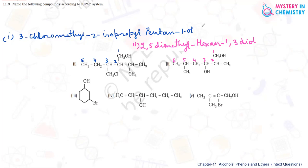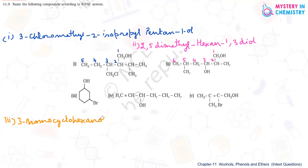Now come to the third compound. The third is simple cyclohexane, so it becomes cyclohexanol. At the third position, a bromine group is present, so the final name of this compound is 3-bromocyclohexanol.